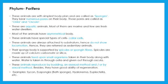Therefore, they are called sedentary animals. They possess special collar cells to produce a current in the water, which helps them catch food. Their body is supported by spicules made up of calcium carbonate and silica. They reproduce by budding — budding is a type of asexual reproduction in which a new organism develops from an outgrowth or bud formed on the body due to cell division. They are capable of regeneration — regeneration means the regrowth of a damaged or missing part from the remaining tissue.